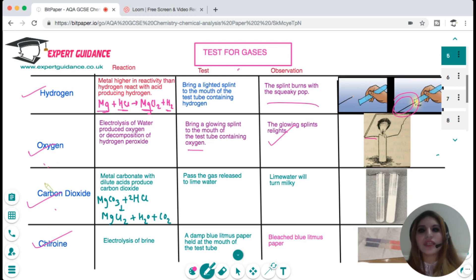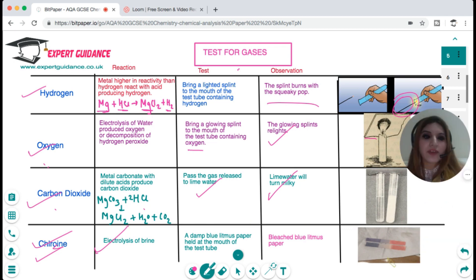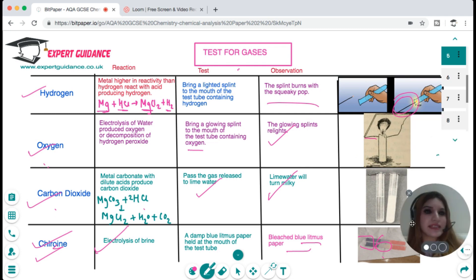Carbon dioxide is produced in combustion reactions or whenever a carbonate reacts with an acid. The test for carbon dioxide is you pass it through lime water and it will turn lime water milky. What's the test for chlorine? Chlorine is produced in the electrolysis of brine. We discussed that in paper 1 electrolysis topic. Whenever you bring a damp blue litmus paper you can see it is bleached. So it bleaches the blue litmus paper. You should know the test of all these gases and where they are produced.